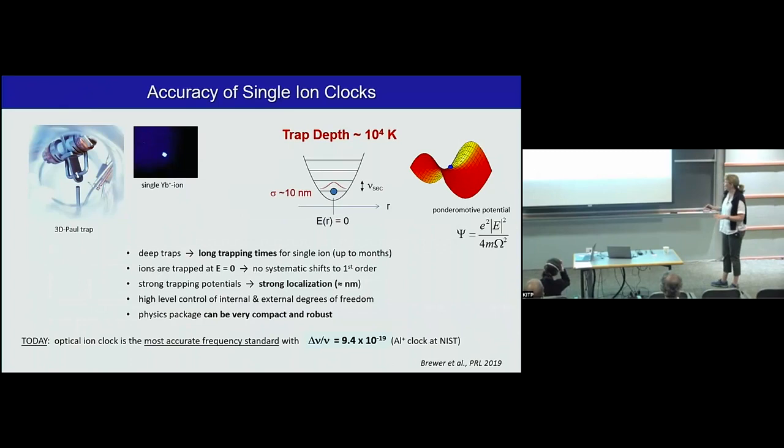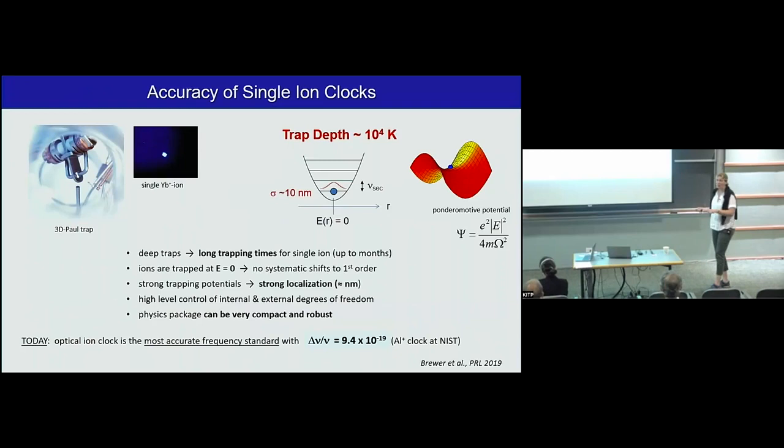The ion clock at NIST, the aluminum quantum logic clock, just broke this limit with 9.4 times 10 to minus 19. This is where we're going. But this is all about accuracy.